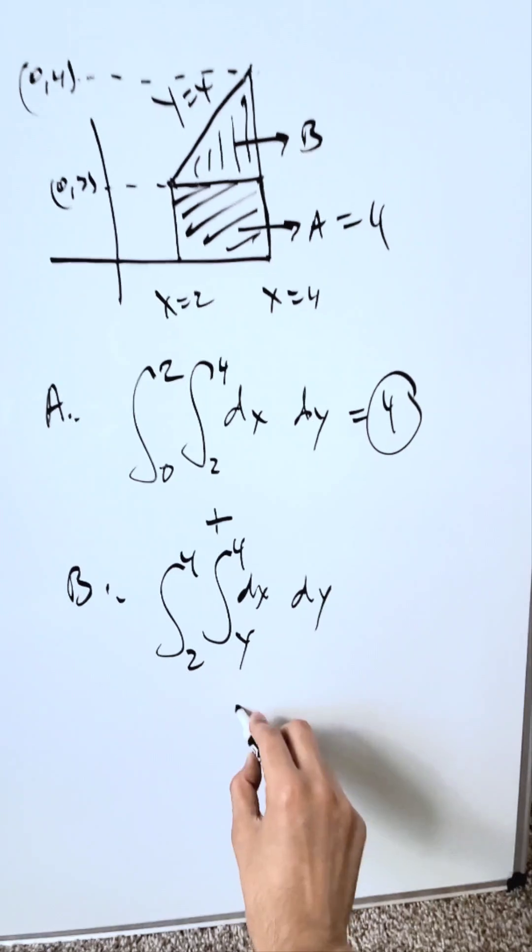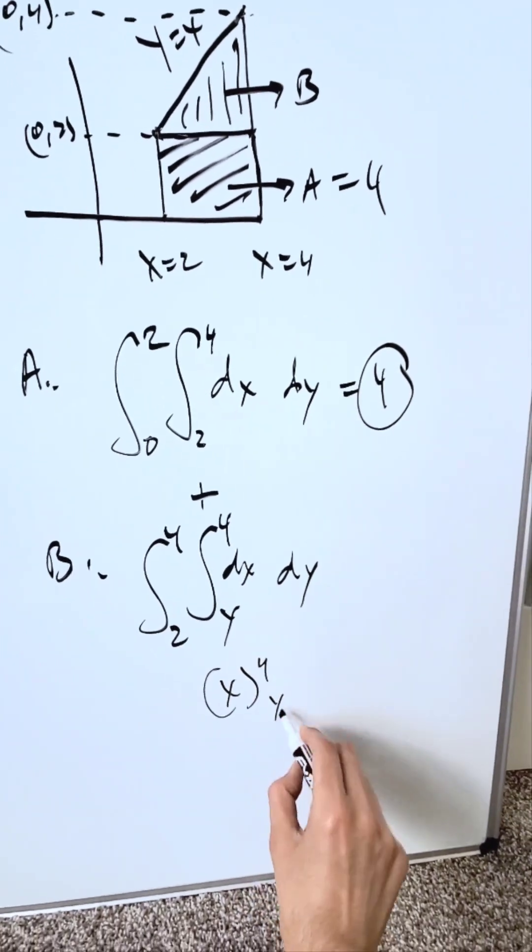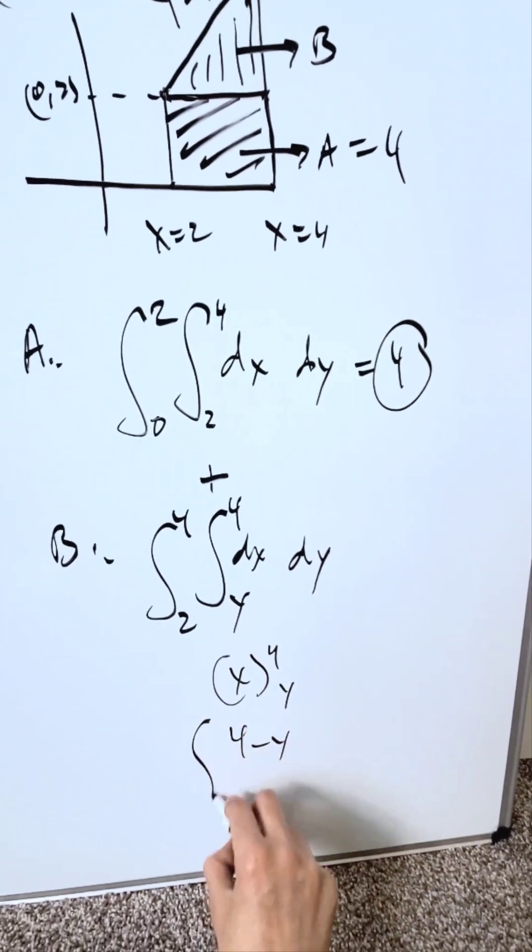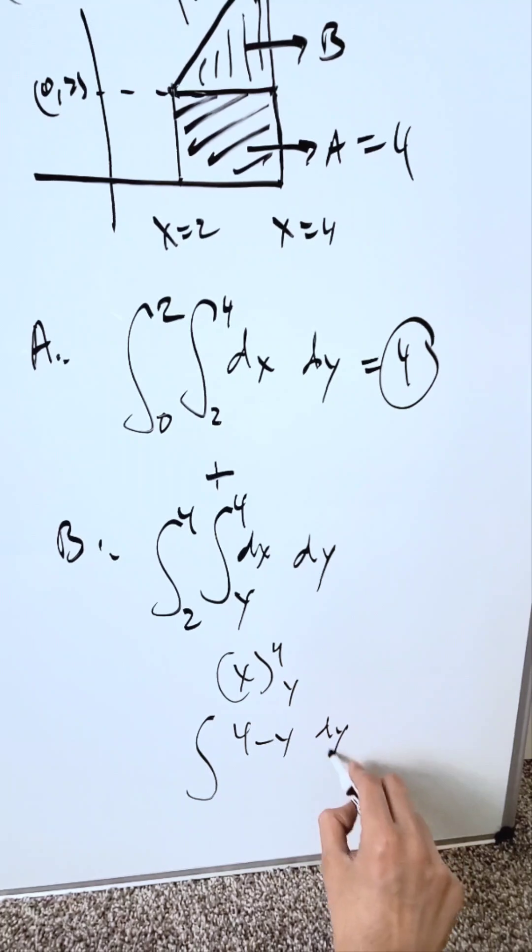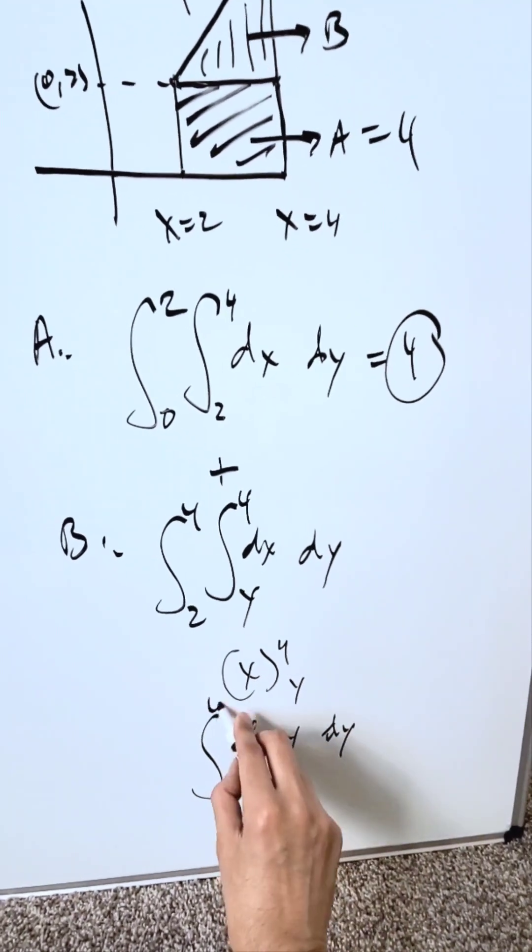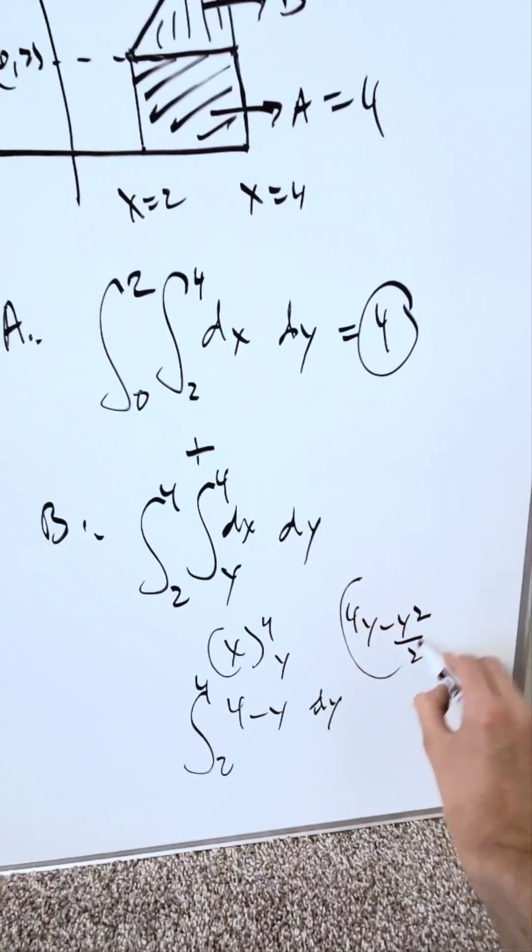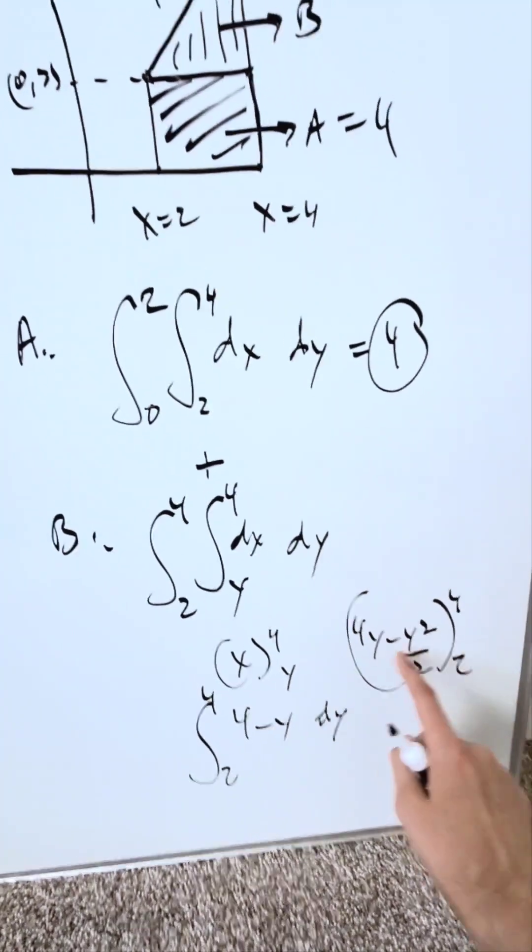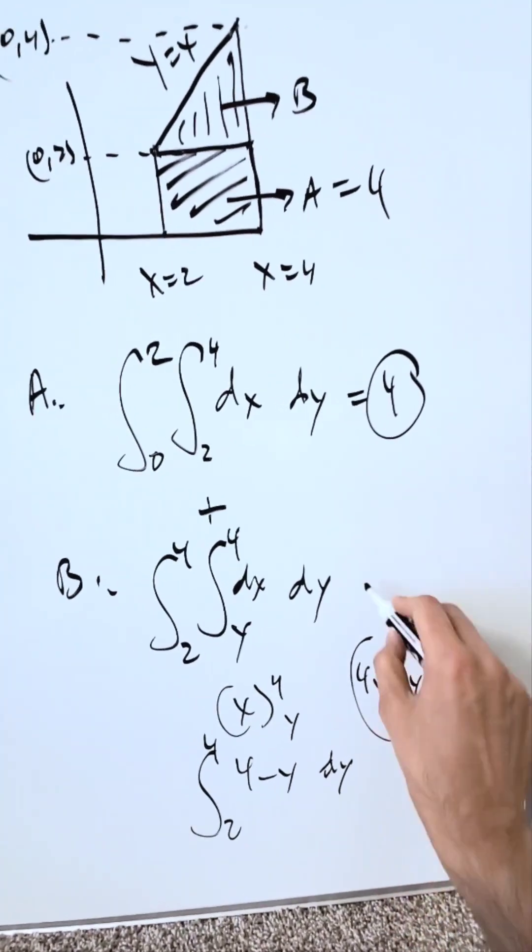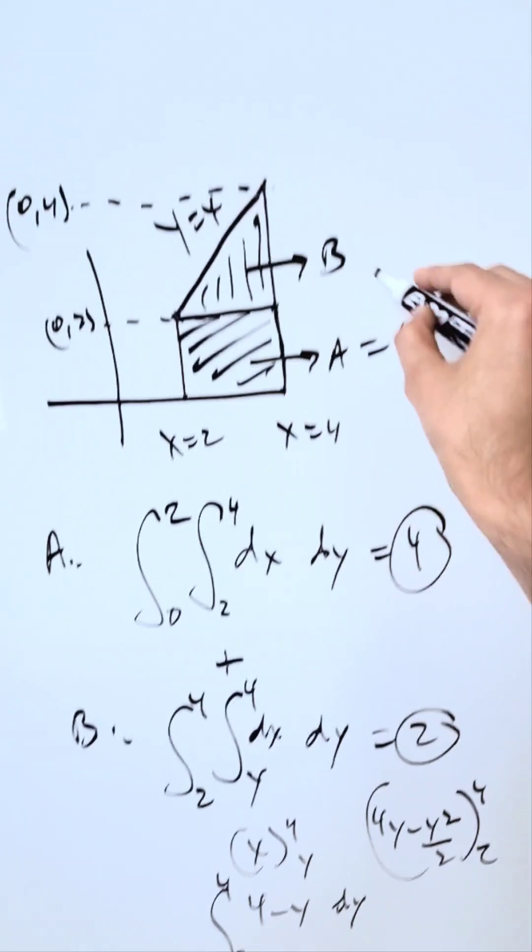Do this, you'll have an antiderivative of x. You have 4 and y, the difference is 4 minus y, and now it's nested in a dy integral from 2 to 4. Your antiderivative here is 4y minus y squared over 2, evaluated from 2 to 4. Put 4 in both places of y, computed properly, you'll have an area of 2, and that's area B.